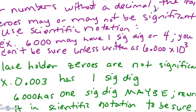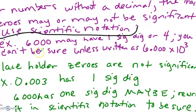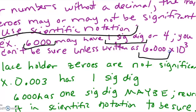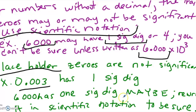For numbers without a decimal, trailing zeros may or may not be significant — the only way to know is to use scientific notation. If you write 6,000, I'll assume it has one sig fig. But if you write 6.00 × 10³, then I know for sure there are four sig figs. Placeholder zeros are not significant — for example, 0.003 has one significant digit and 6,000 has one significant digit. Rewrite in scientific notation to be sure.